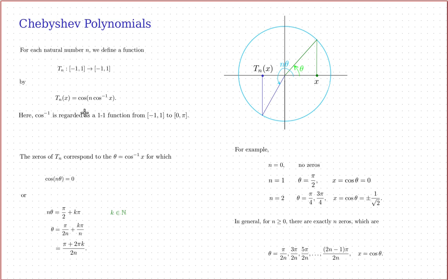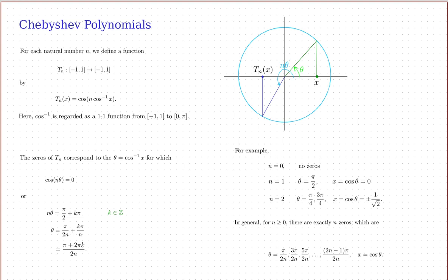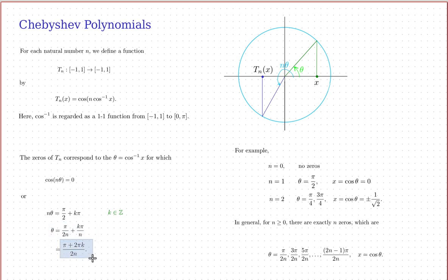tn equals zero when cosine of n*theta equals zero. Cosine equals zero when the angle is of the form pi/2 + k*pi, where k is any integer. Solving for theta by dividing both sides by n, tn will be zero when theta is of the form pi/(2n) plus some multiple of k*pi/(n) — in other words, basically pi/(2n) plus even multiples.